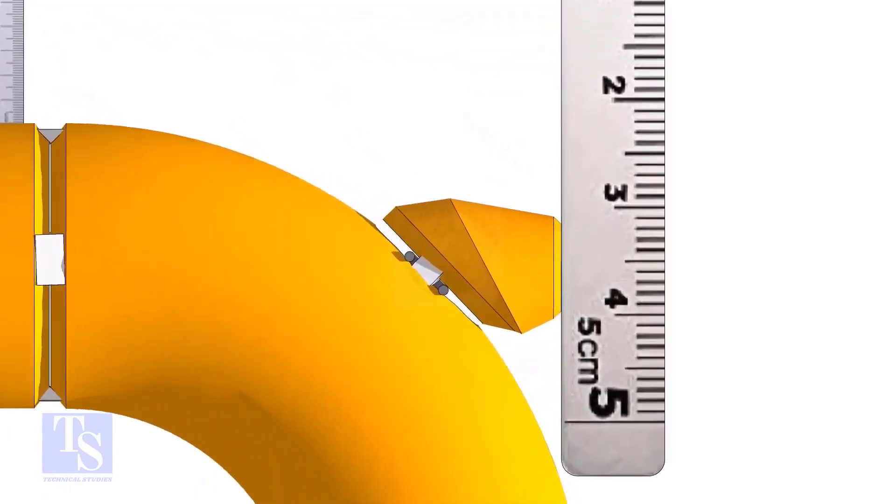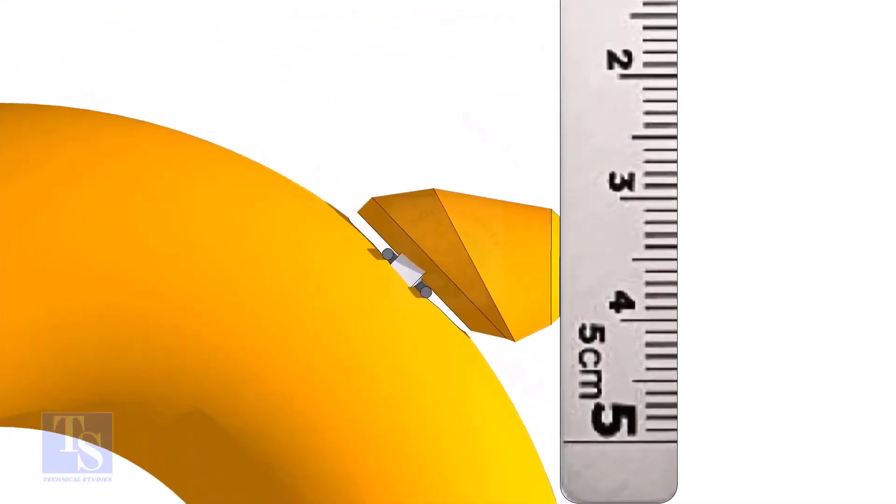Maintain the vertical squareness and tack weld on the top and bottom side of the elbowlet.